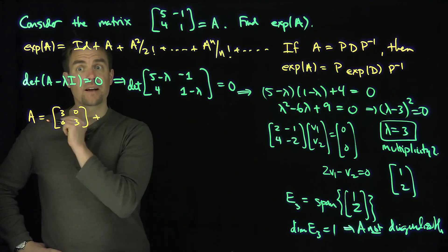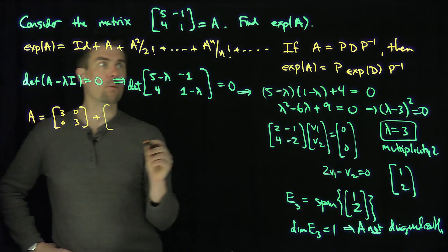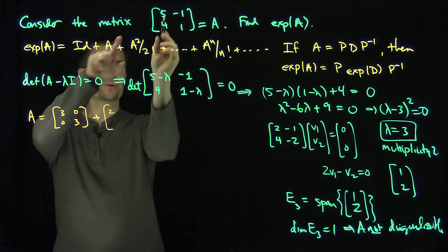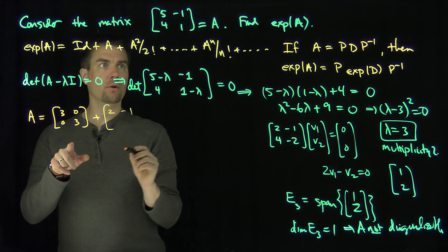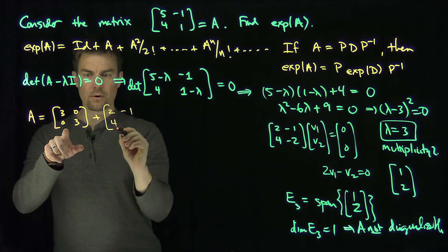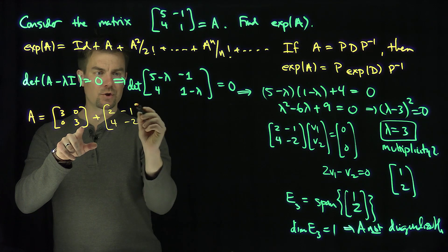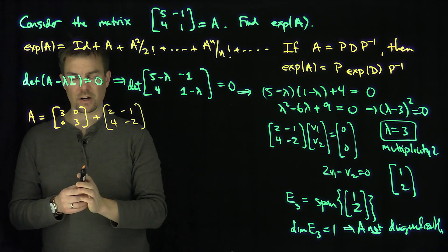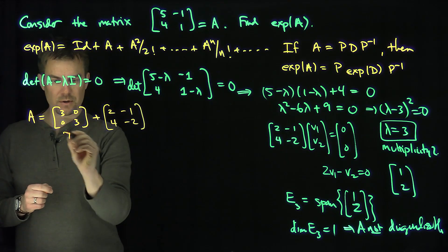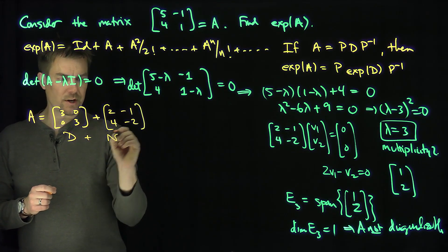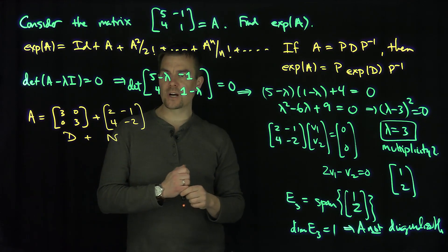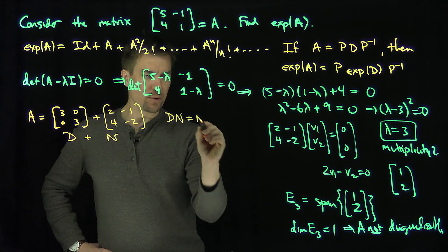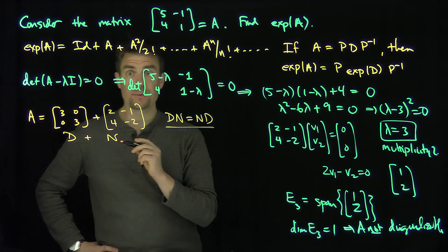To recover the entries of A from D + N: I need a 2 up top (since 3 + 2 = 5), a -1, a 4, and a -2. So N = [[2, -1], [4, -2]]. I call this matrix D and this matrix N. We can check that DN = ND — these matrices commute with one another.